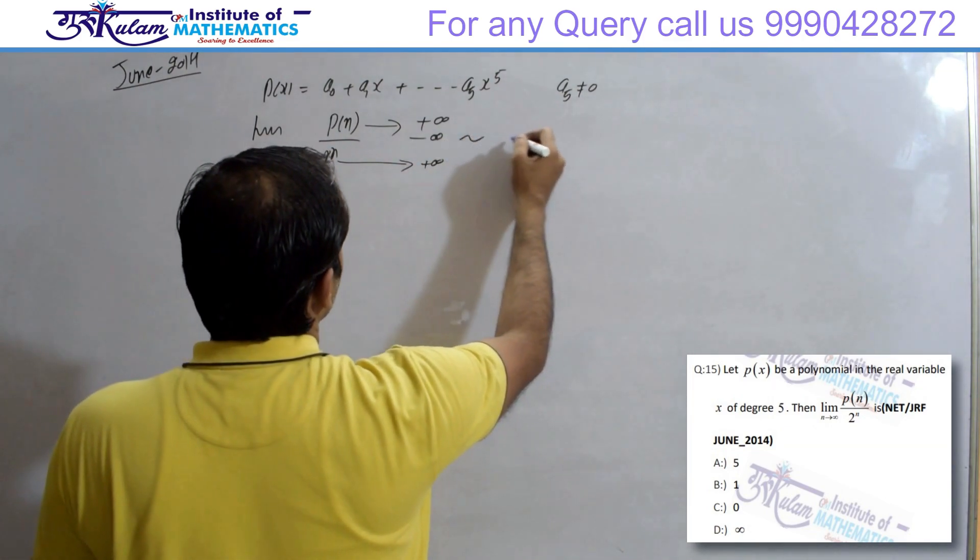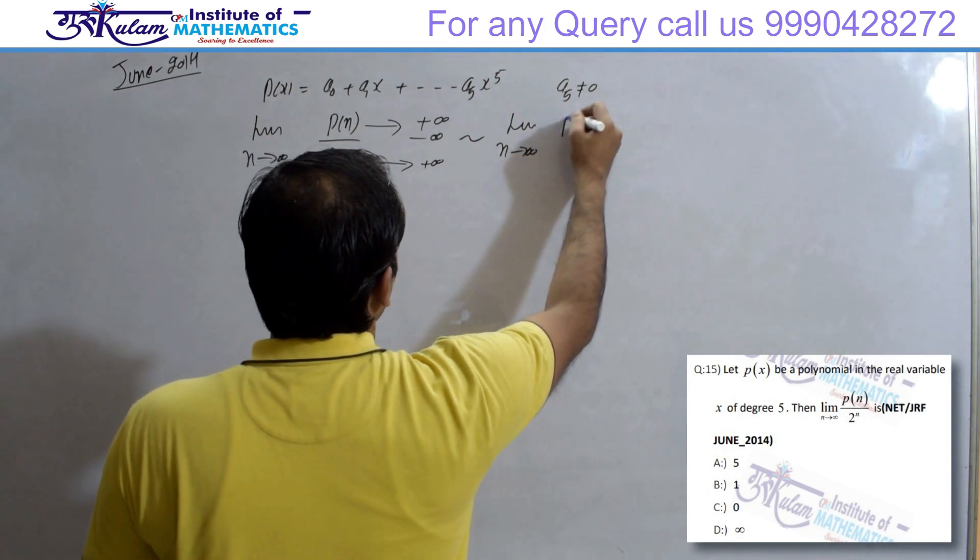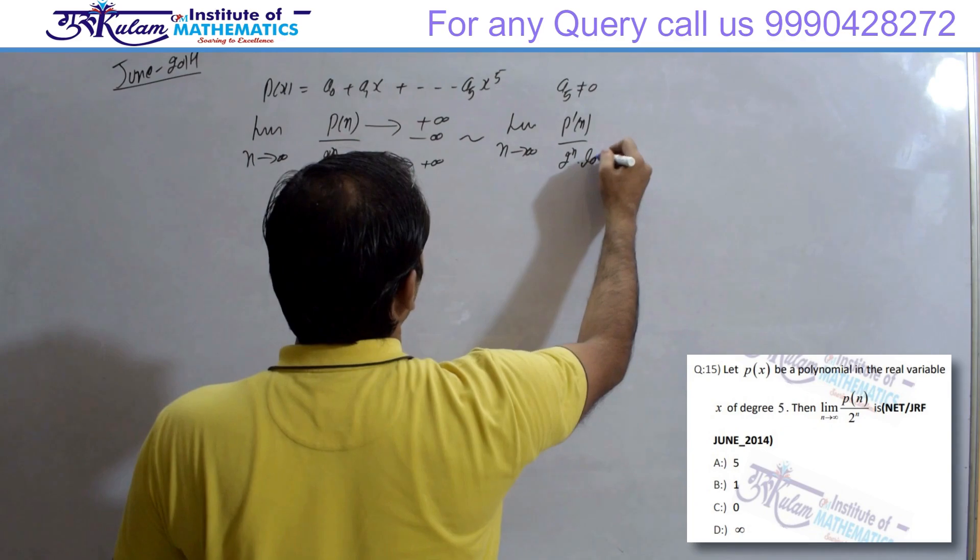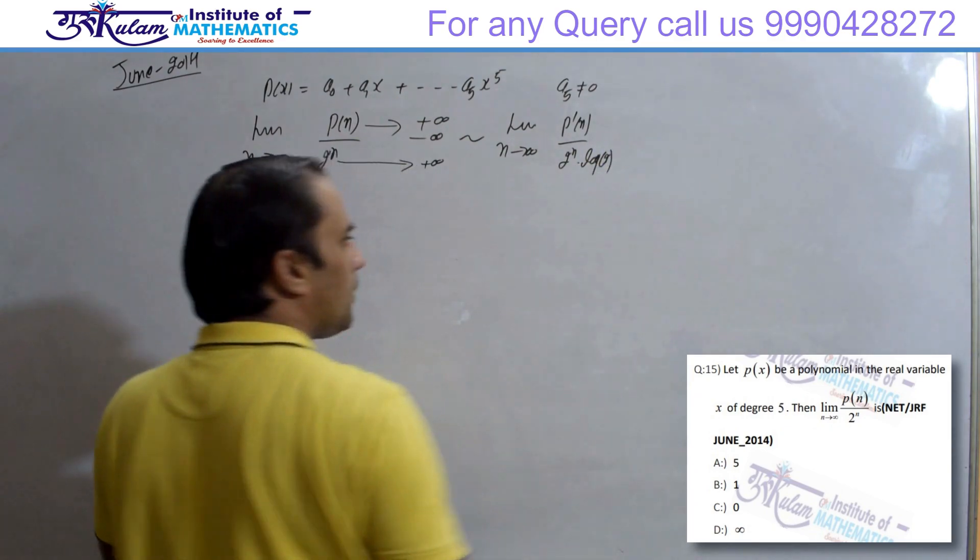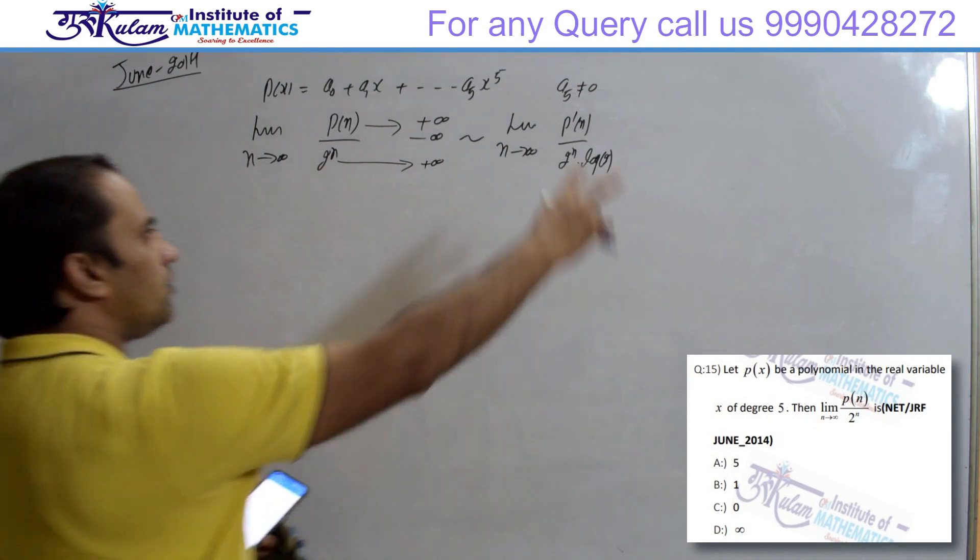तो L'Hospital rule use कर सकते हैं. तो this is equivalent to limit N tends to infinity, P dash N upon 2 to the power N into log 2 आ जाएगा, A to the power X का derivative. और उपर polynomial का derivative करेंगे, तो ये आएगा.